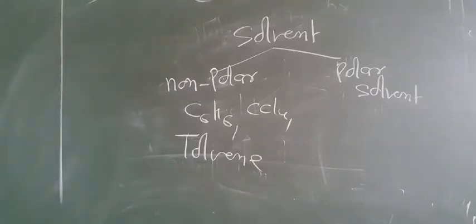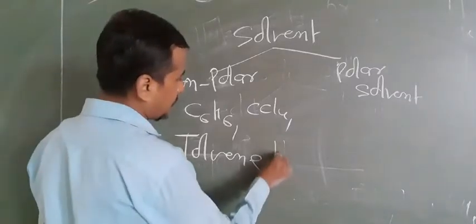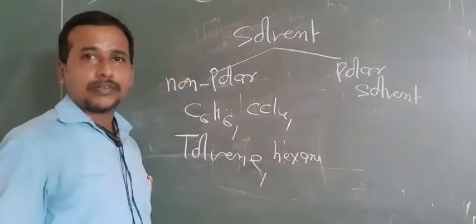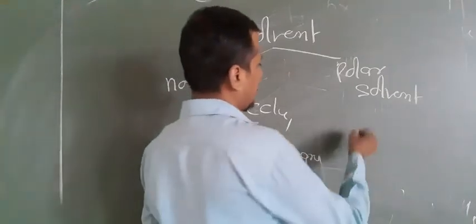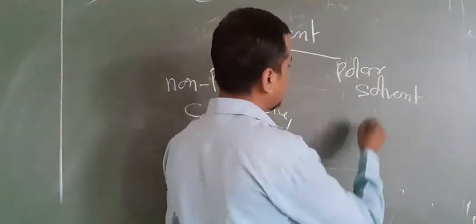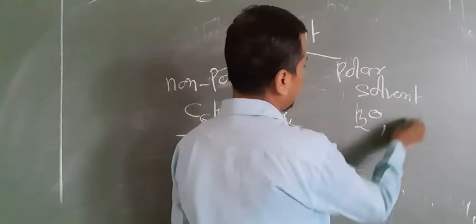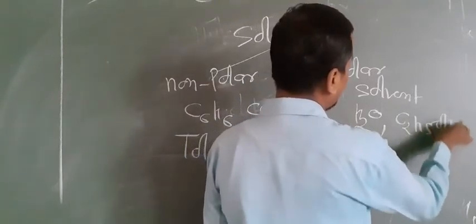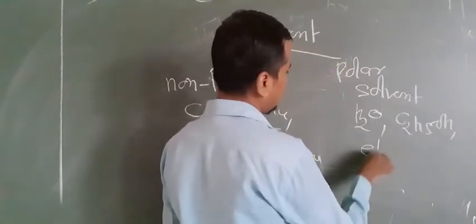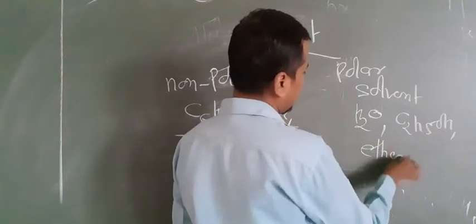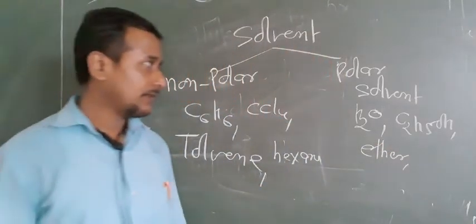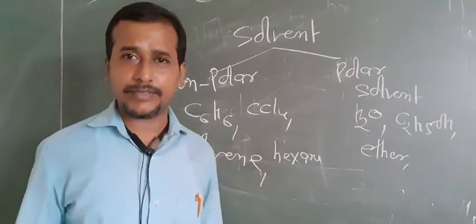Now, what about polar solvents? The most common examples of polar solvents are water, alcohol (C2H5OH), ether, chloroform, and acetic acid. These are some common examples of polar solvents.